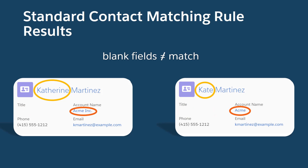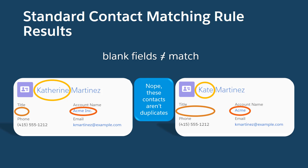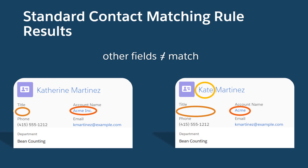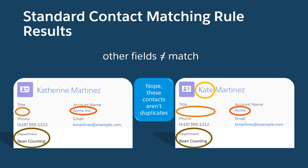But let's say both title fields are blank. The equation doesn't identify these records as duplicates, even though the name and account fields match. That's because the matching criteria on the title field don't define blank fields as matches. And the rule doesn't count fields that aren't included in the equation, even if the contacts contain identical data.